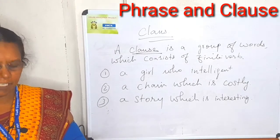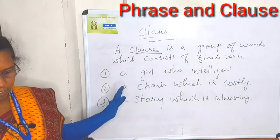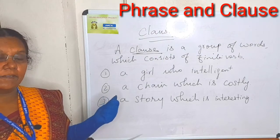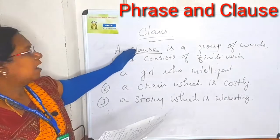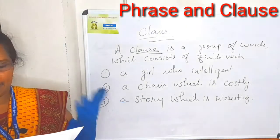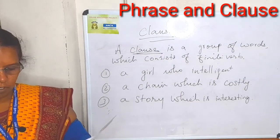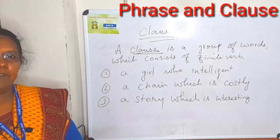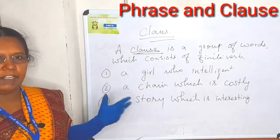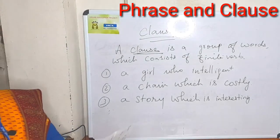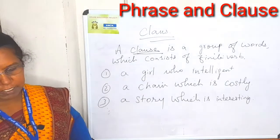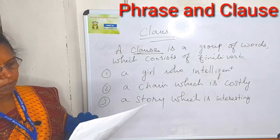Adjective phrase: it is a group of words that works as an adjective — it describes a noun. For example, we bought chairs made of wood for our auditorium. Here, 'made of wood' is called the adjective phrase. Same way, adverb phrase is given. When the patient was taken to the emergency ward, the doctors rushed there in a hurry manner. Here, 'in a hurry manner' is the adverb phrase.